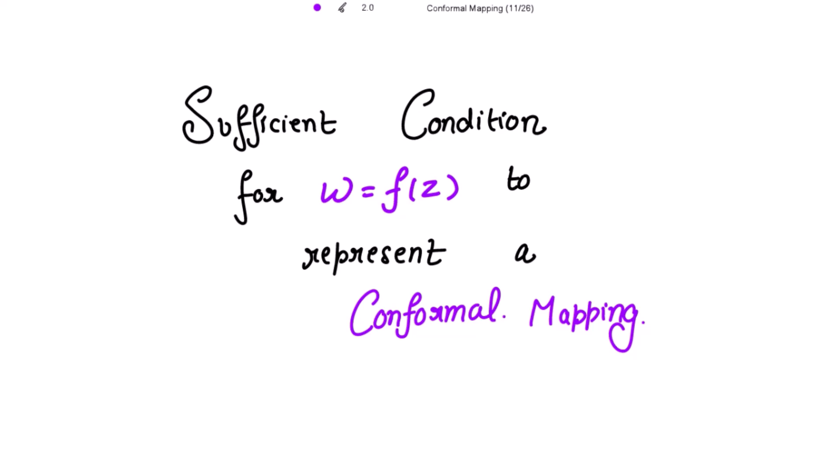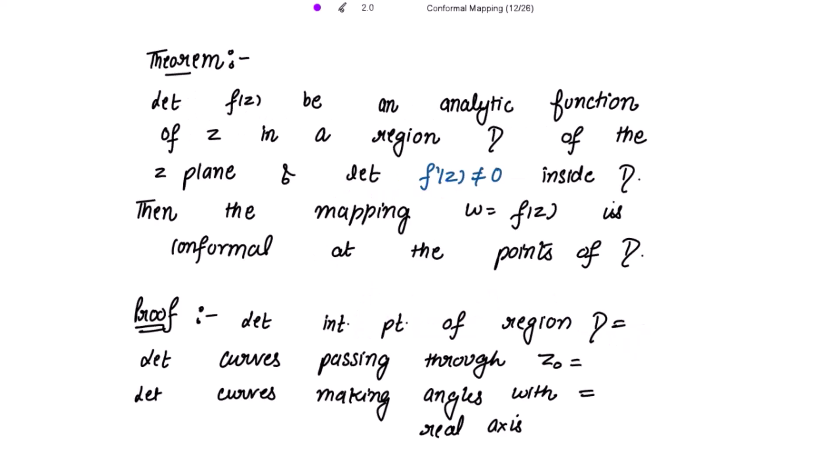Let's move on to the sufficient condition for w equal to f(z) to represent a conformal mapping. We are going to prove the sufficient conditions. The theorem is: let f(z) be an analytic function of z in a region d of the z-plane, and let f'(z) be not equal to zero inside d. Then the mapping w equal to f(z) is conformal at the points of d.